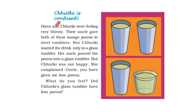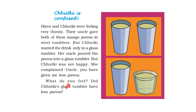Chutki is confused. Hiran and Chutki were feeling very thirsty. Their uncle gave both of them mango panna in steel tumblers. But Chutki wanted the drink only in a glass tumbler. Her uncle poured the panna into a glass tumbler. But Chutki was not happy. She complained, 'Uncle, you have given me less panna.'